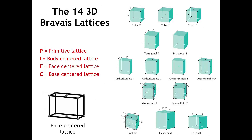Here is a graphical representation of those 14 different lattices, and there are symbols for them: P for a primitive lattice, I for a body-centered lattice, F for a face-centered lattice, and usually C — but sometimes A or B — for a base-centered lattice.